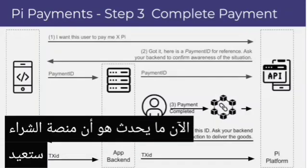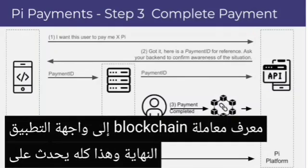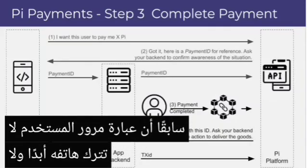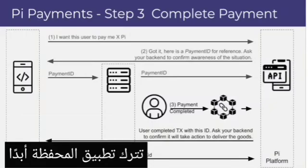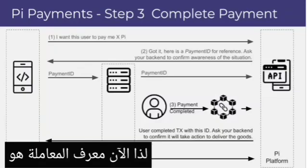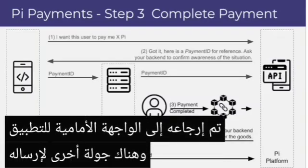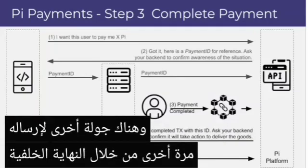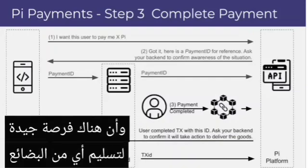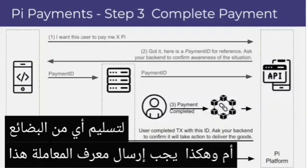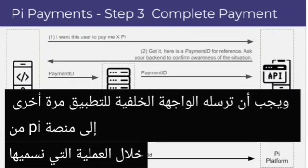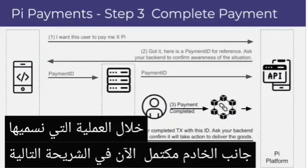That is all handled by the Pi wallet and the platform, and none of it is the responsibility of the developer. The Pi platform is going to return the blockchain transaction ID to the app's front end — this is all happening on the front end side, partly because the user's passphrase never leaves their phone or wallet app for obvious security reasons. The transaction ID is returned to the app's front end, and there is another round of sending it back through the back end to prove that the transaction ID has been received. The app's front end sends it to the app back end, which sends it again to the Pi platform through the process called server-side completion.